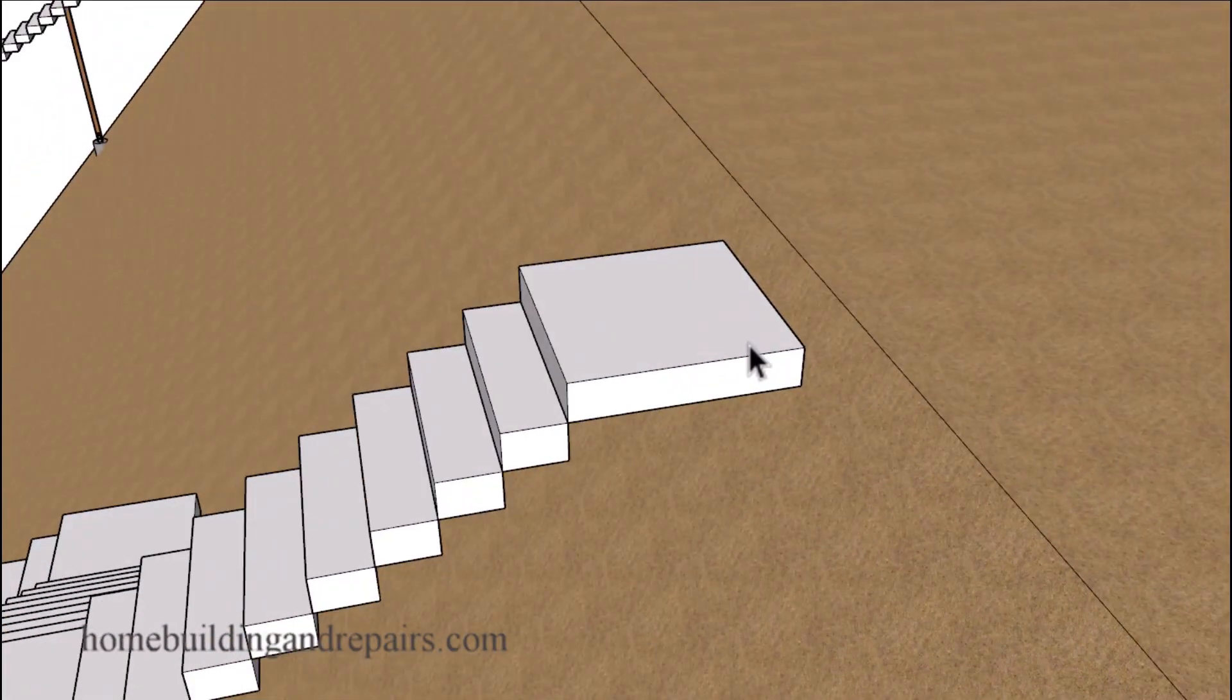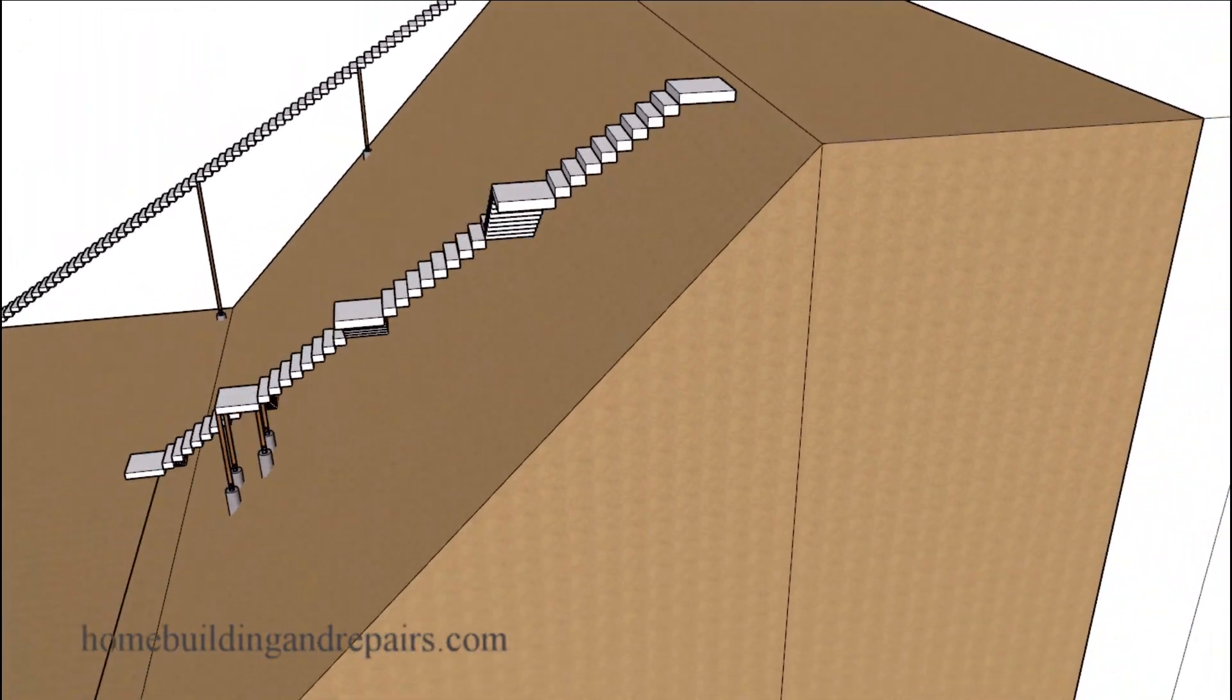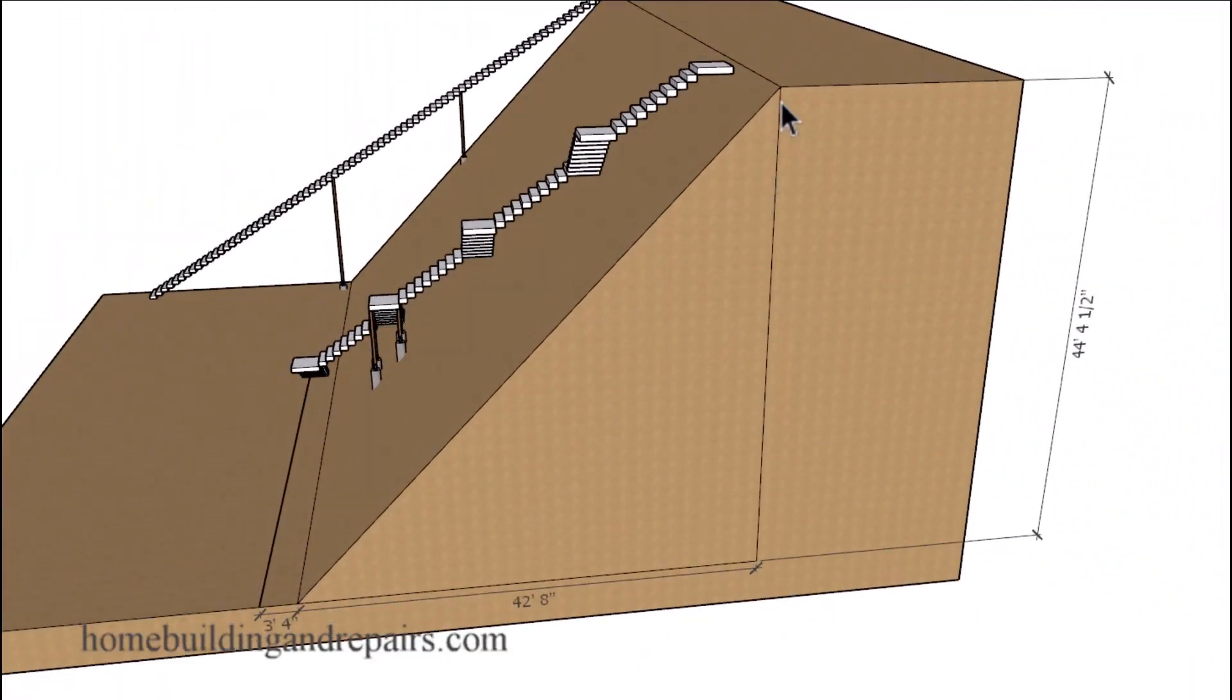Your stairway might be different. You might need to add a little more or make the landing a little bit shorter at the top. Make sure that you actually find the total rise, the total height between the upper and the lower level, as well as the horizontal distance to make all of the necessary calculations to design this stairway.